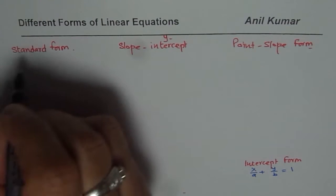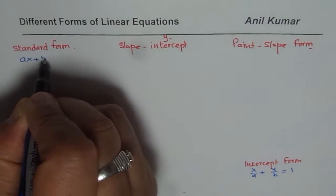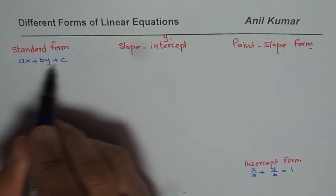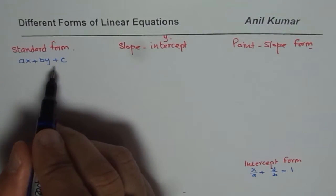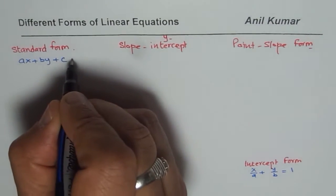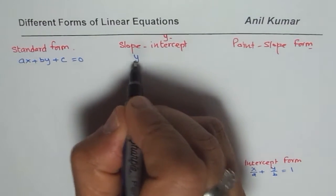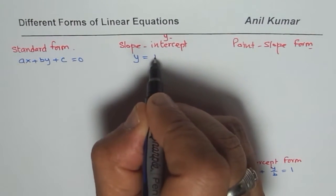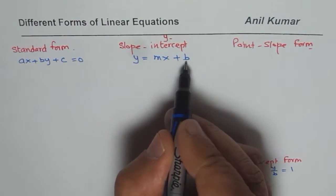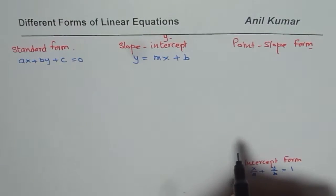The standard form of a line is given as ax plus by plus c equals 0. The slope-intercept form is written as y equals mx plus b, where m is the slope and b is the y-intercept.